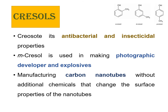Next, we are going to study cresols. Cresols are nothing but phenol with an additional methyl group as a substituent. The methyl group can be present at the ortho position, named orthocresol, at the meta position, or the para position. Like phenol, they are also used as antibacterial agents and in insecticide preparations. Metacresol in particular has been widely used in photographic developing and as an explosive. All these cresols have been used in synthesis of carbon nanotubes, and this synthesis has turned out to be easier without additional chemicals, so changes in the properties of these nanotubes are also avoided.